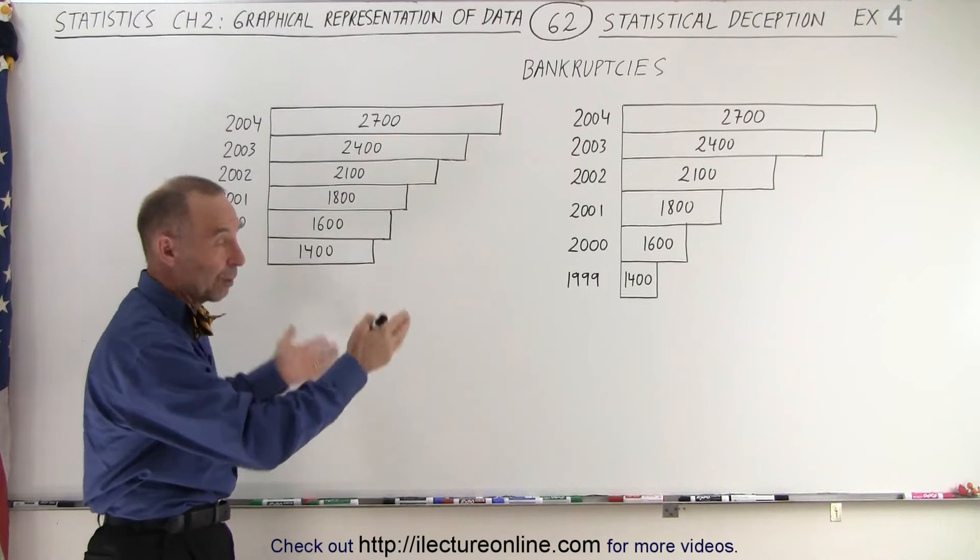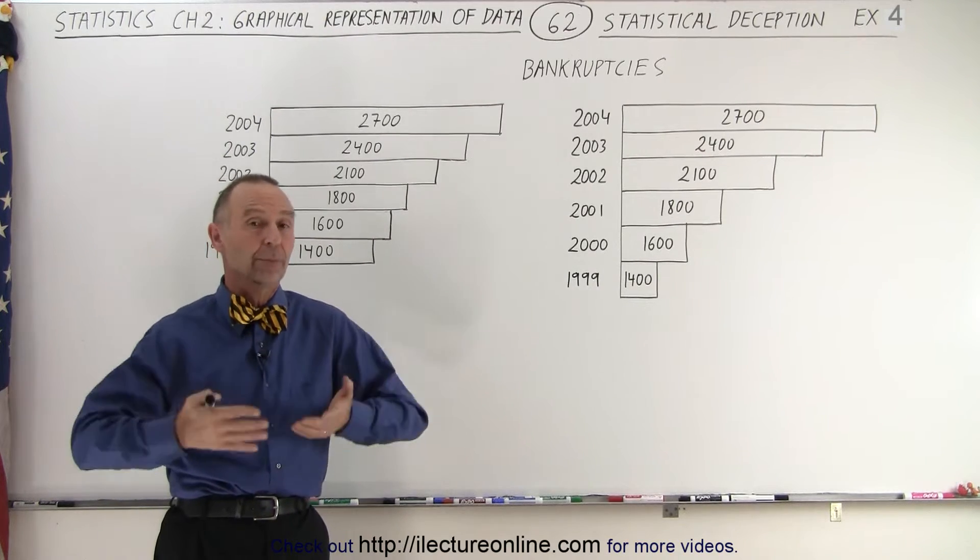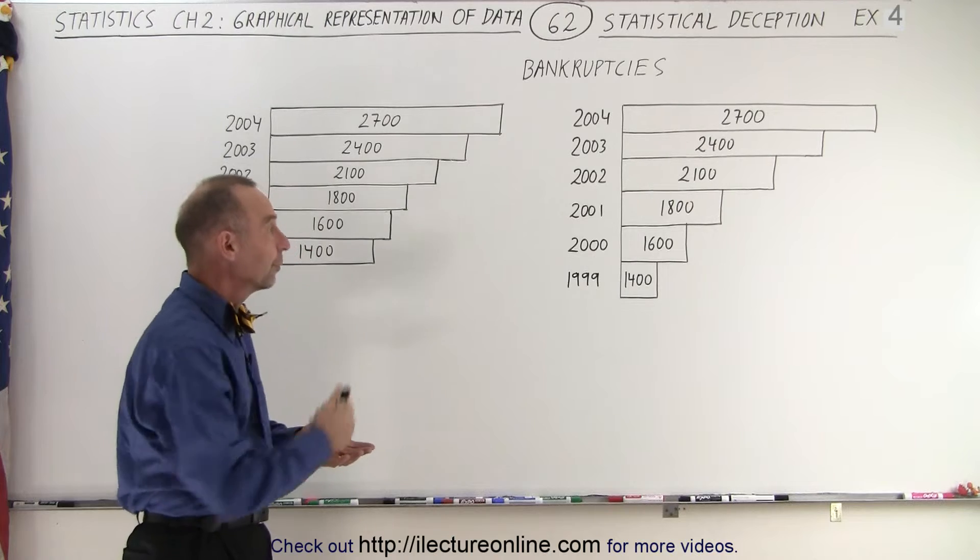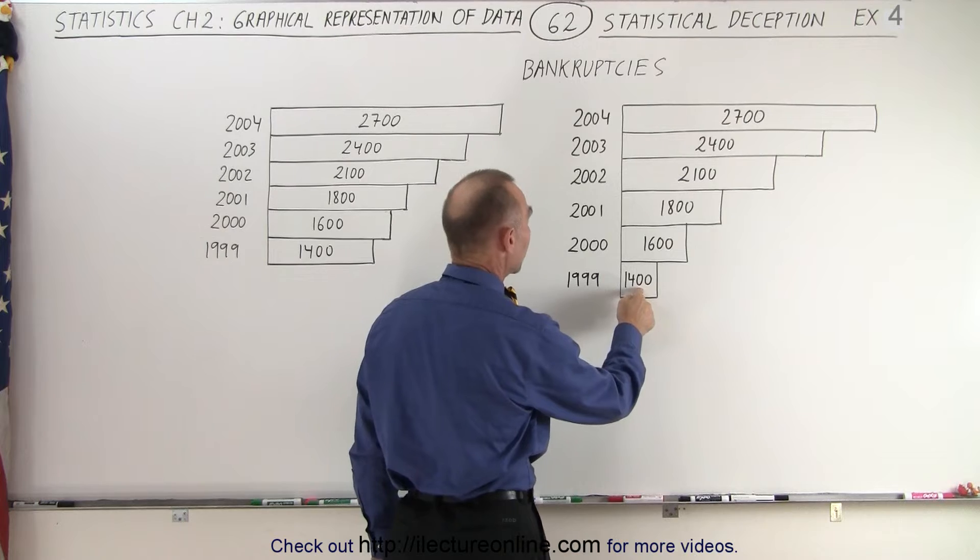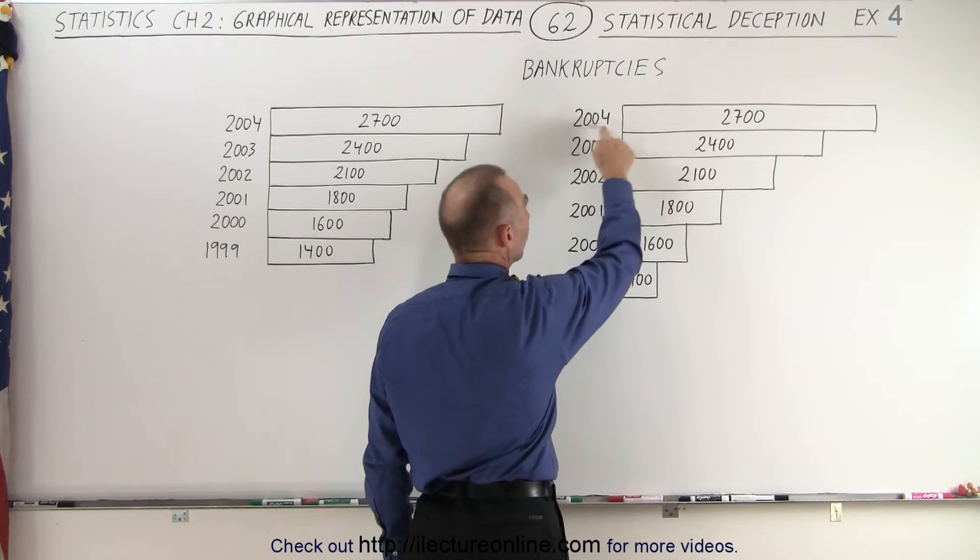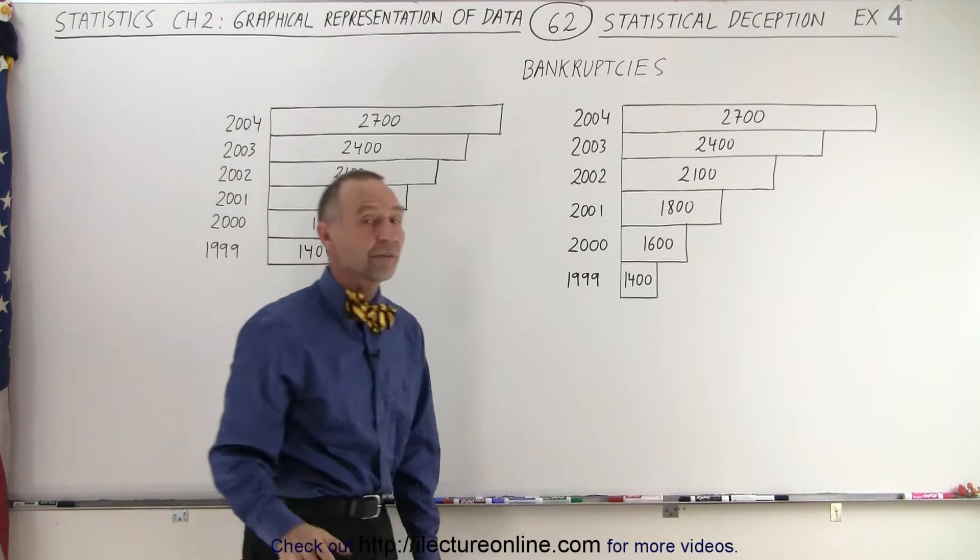So let's say that these are graphs representing the number of bankruptcies in a particular state for the particular years. Notice that in 1999 there were 1400 bankruptcies. By the time 2004 came along there were 2700 bankruptcies.